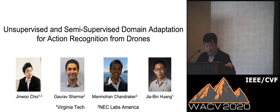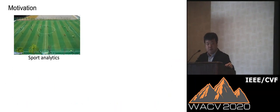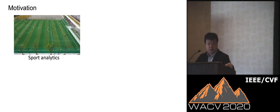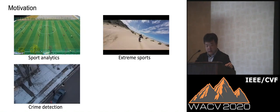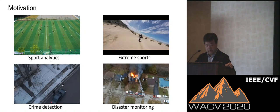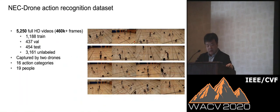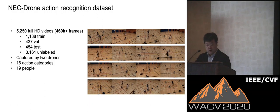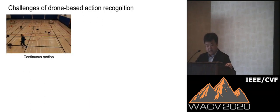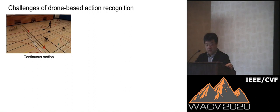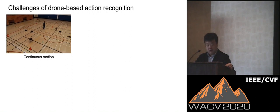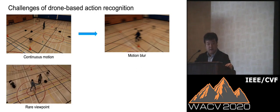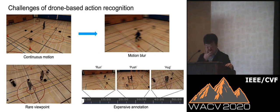Hello, everyone. I'm Jinwoo. I'm going to talk about domain adaptation for action recognition from drones. Drone-captured videos are popular these days and can be used for sports analytics, extreme sports, crime detection, and disaster monitoring. To study this problem, we collected a new dataset consisting of 5,000 videos. The challenges include continuous motion in drone videos causing severe motion blurs, rare viewpoints, and the high expense of annotating videos.